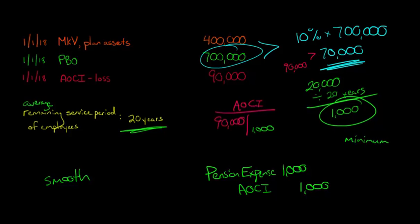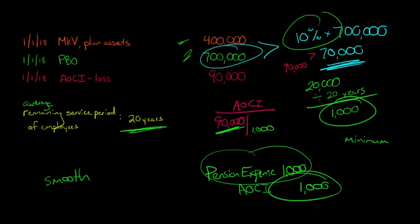They are forced now to say, look, we went outside of what our estimates were. Either the actuaries made some mistakes or our expected return was a lot higher than what the actual return was. And so we've got some losses here. And they're high enough that they're greater than 10% of the higher of the PBO or the market value. So now we're going to debit pension expense for $1,000, credit AOCI for $1,000.